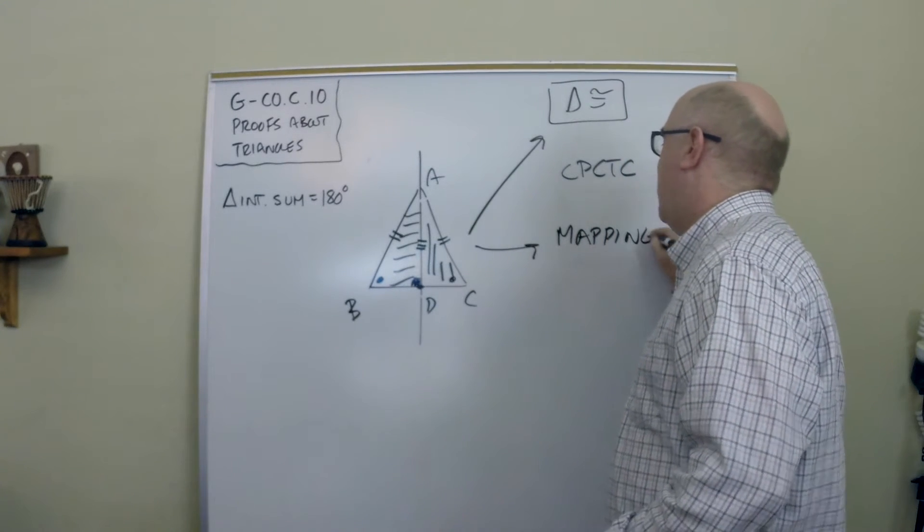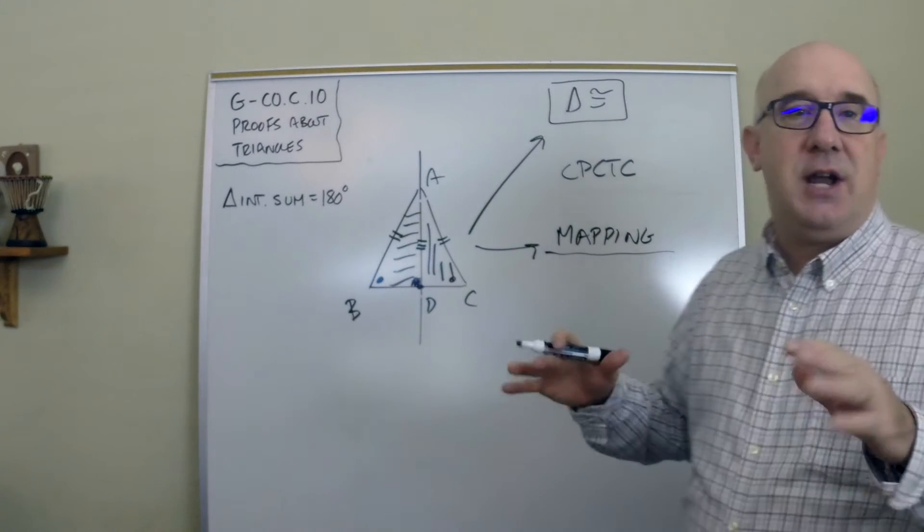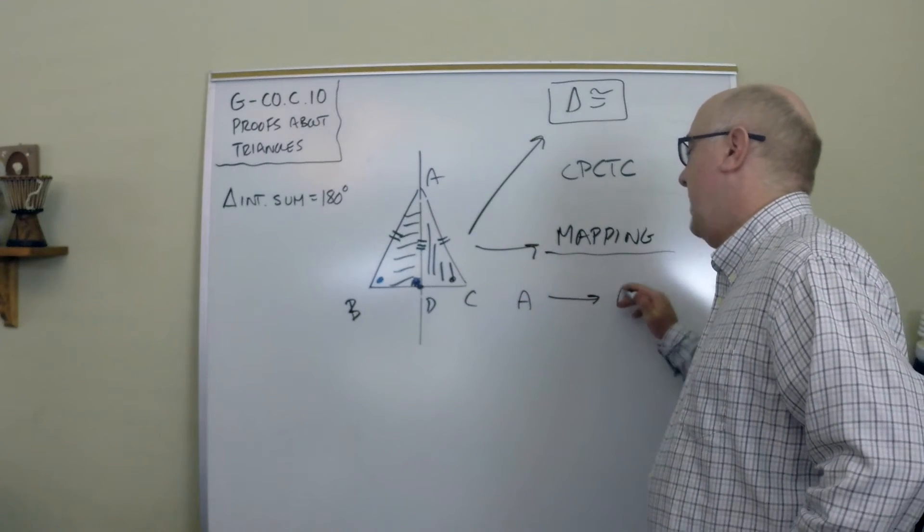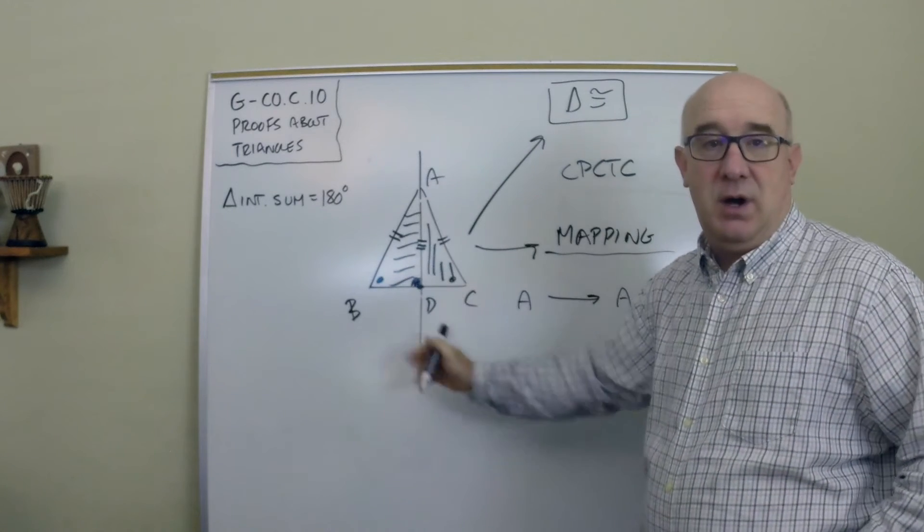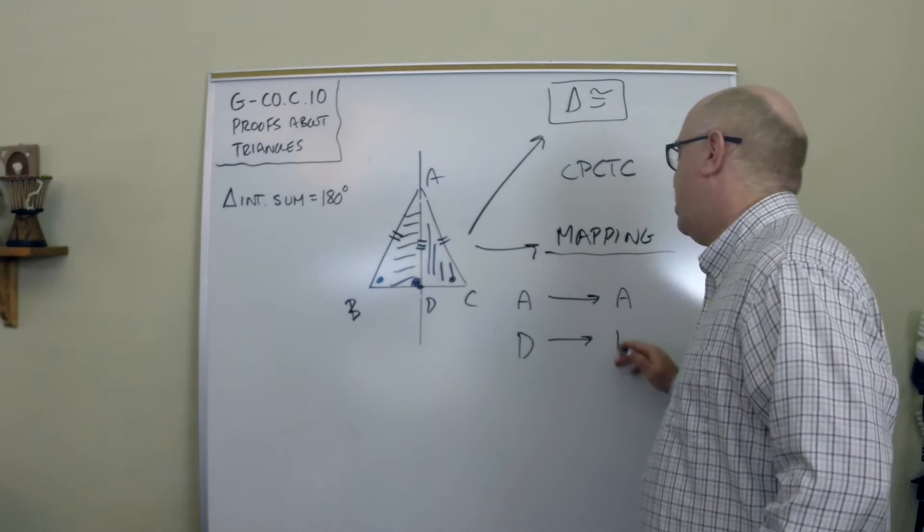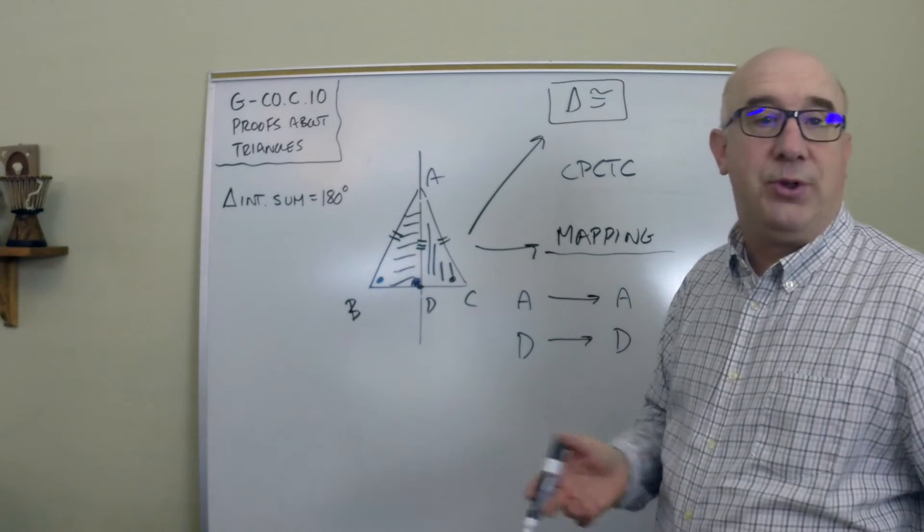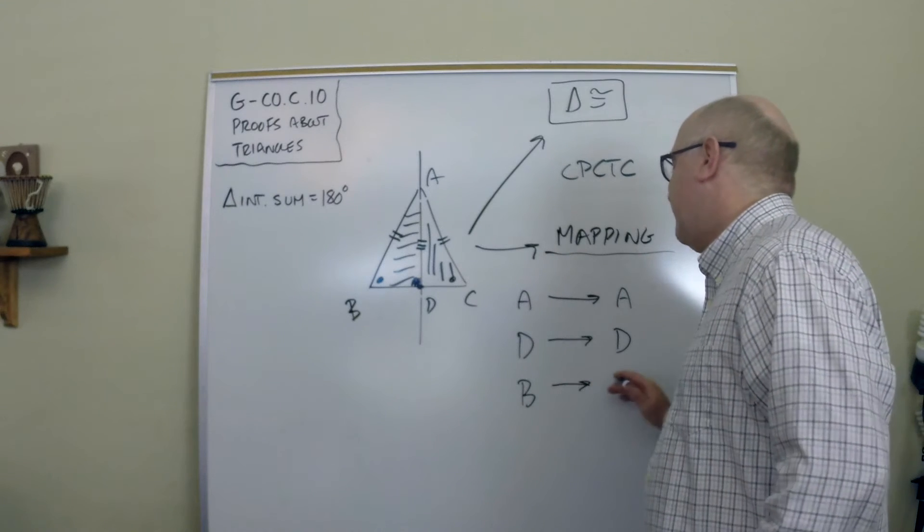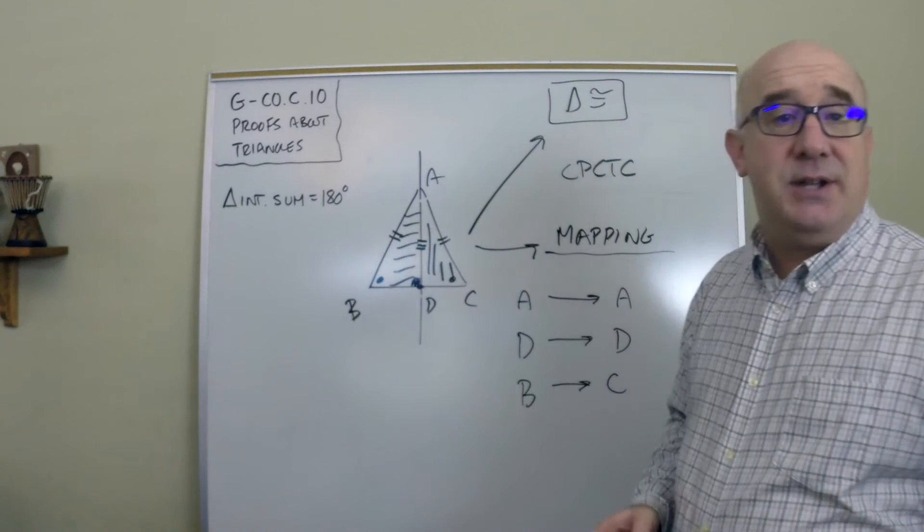And the approach, again, in kind of casual terms, might talk about A mapping to A, if this is our line of reflection. D would map to D, of course, both on the line of reflection. And B has to map to C because, by definition, a line of reflection is the perpendicular bisector of that segment BC.